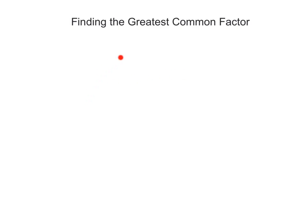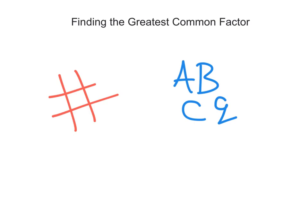Here we're going to be trying to find the greatest common factor — what that means is what is the largest number that can multiply into other given numbers. In order to do this, we have two things to consider: first, regular numbers (and yes, before this was a hashtag, it meant 'number'), and second, letters or variables.